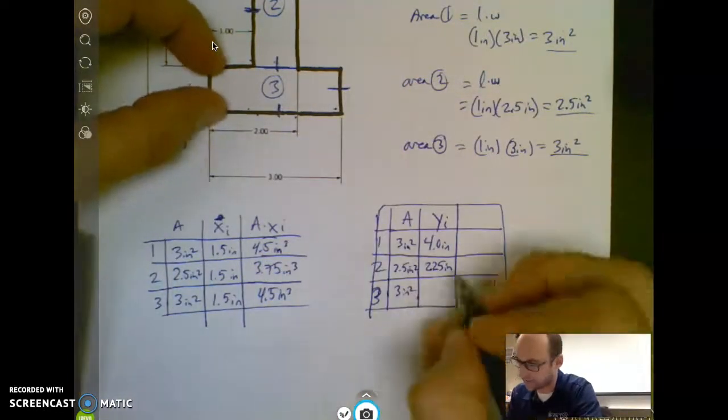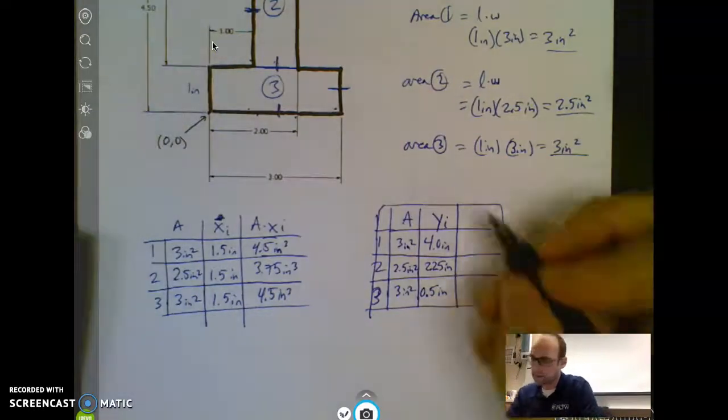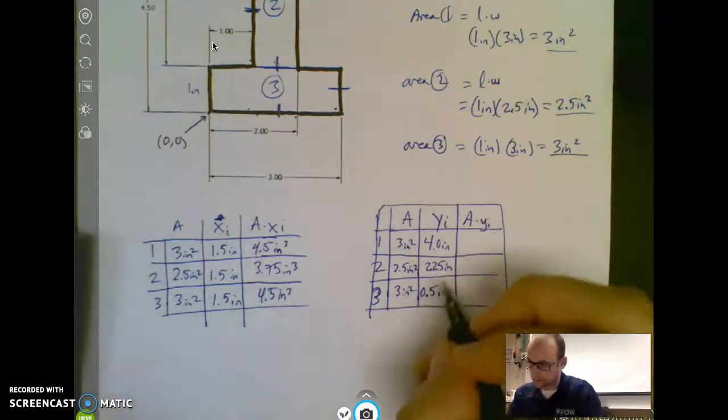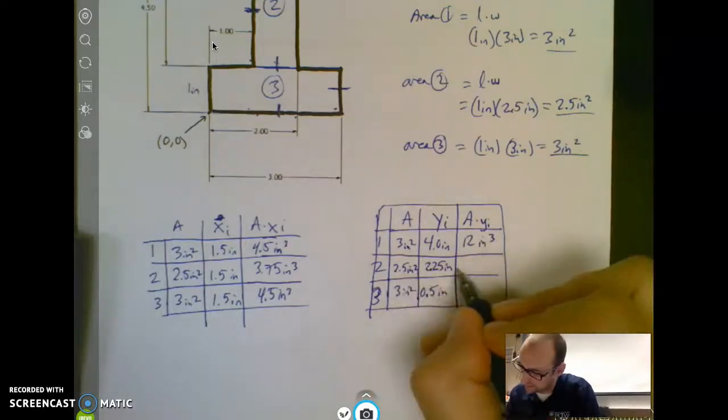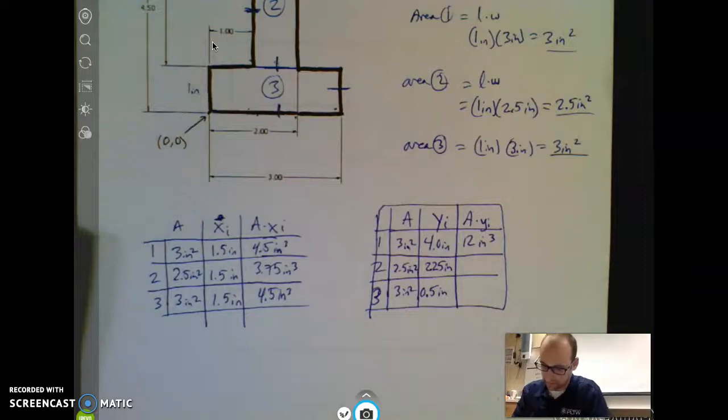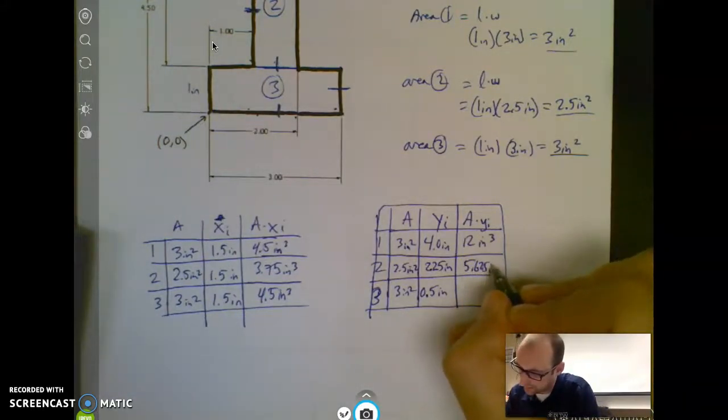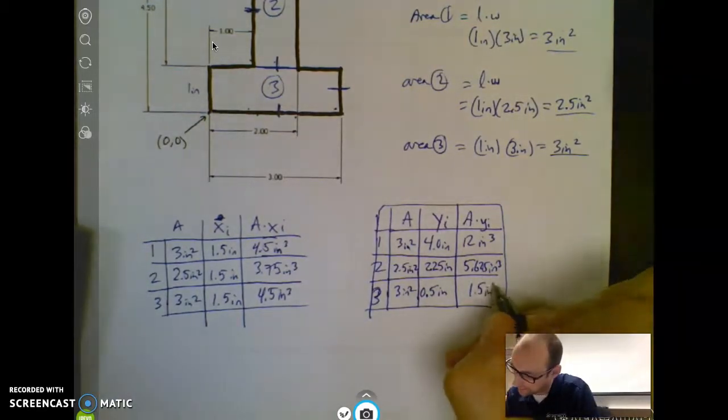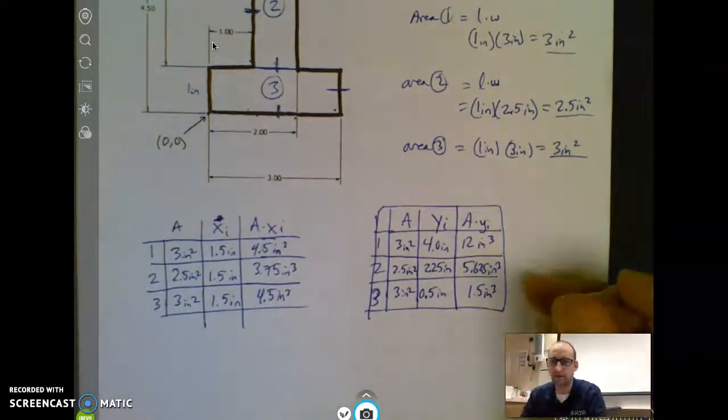And the last shape is halfway up here. If it's 1 inch, then this one's the easy one, because it's sitting on the ground. It's 0.5 inches. Now I multiply those together, A times YI, and we'll get 12 inches cubed. We'll get 2.5 times 2.25. We'll get 5.625 inches cubed. The last one, 1.5 inches cubed.